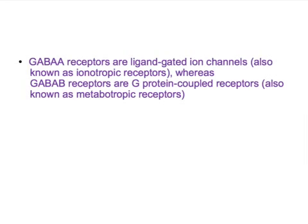Both mechanisms result in membrane hyperpolarization — this is how they act. Now we have two important drug classes: benzodiazepines and barbiturates. Benzodiazepines potentiate GABA, whereas barbiturates prolong GABA activity. Note the difference: benzodiazepines potentiate GABA, barbiturates prolong GABA activity.